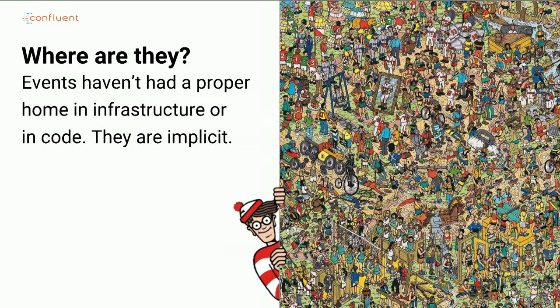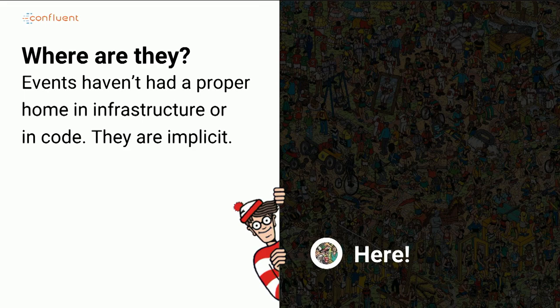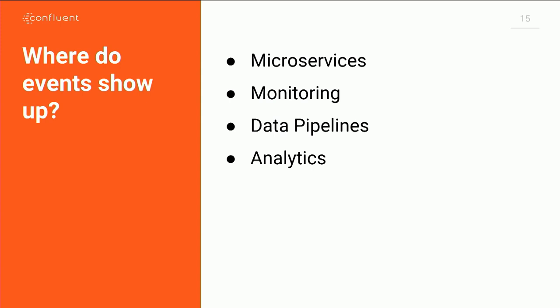Increasingly, events are becoming visible and coming to the foreground. I'm going to go through a couple of areas where I think this is happening: in microservices, in data pipelines and ETL, and in analytics. And the fact that this is happening across a lot of these areas means there's some synergy between them.